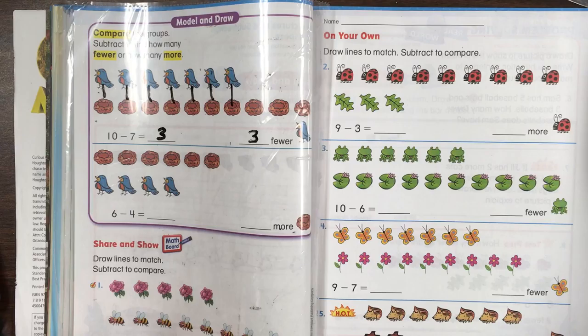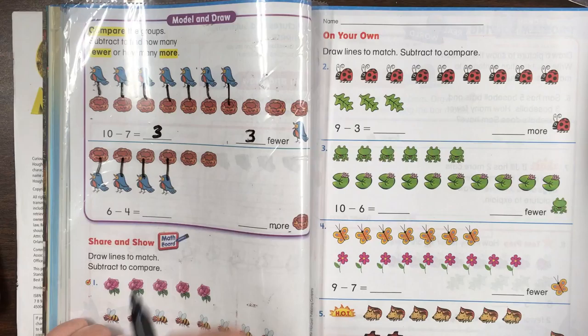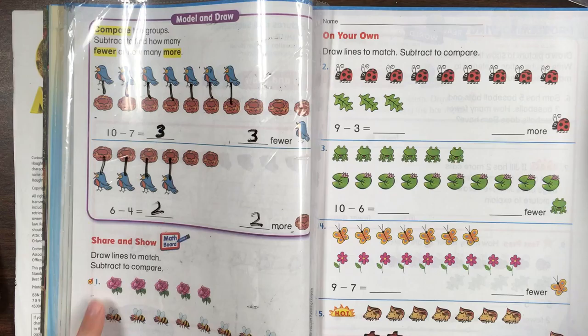Now let's look here. Are there more nests or fewer nests? There are more nests. Let's connect each bird to a nest or each nest to a bird until we run out. How many do we have left? Two. There are two more nests than there are birds.